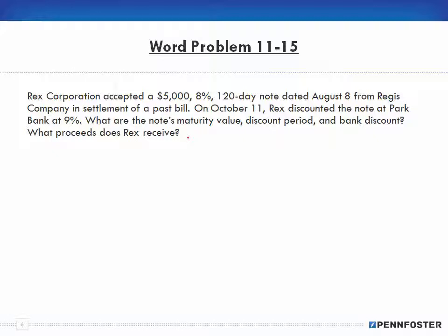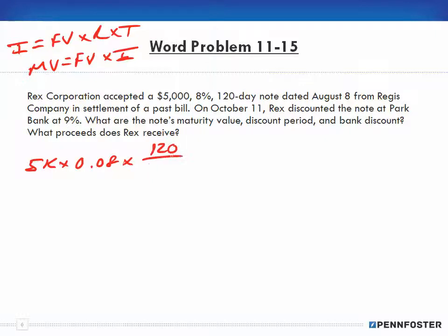Basically it's all still the same thing. Interest equals face value times rate times time. We have a $5,000 note at 8% interest for 120 days. That's 5,000 times 0.08 times 120, which is 48,000.